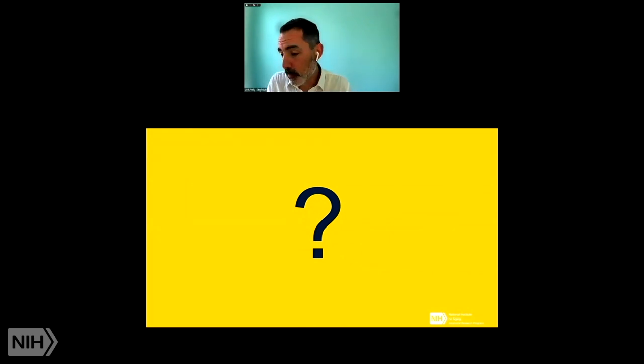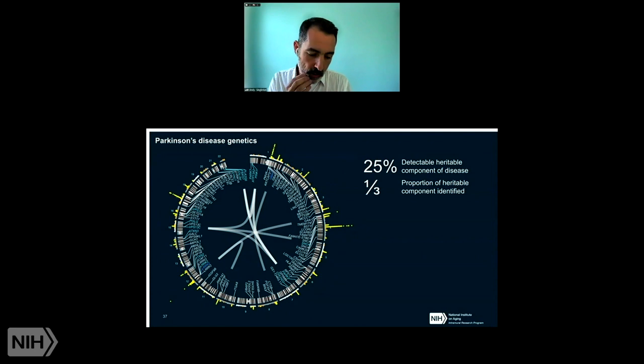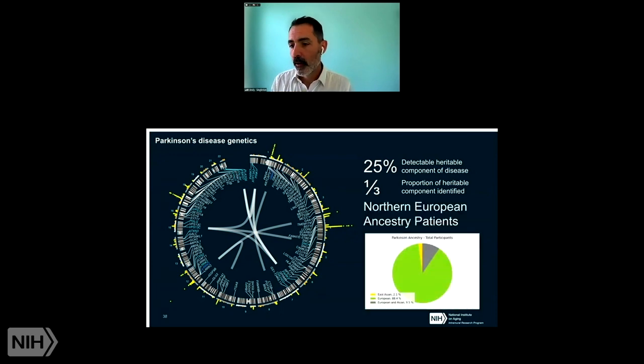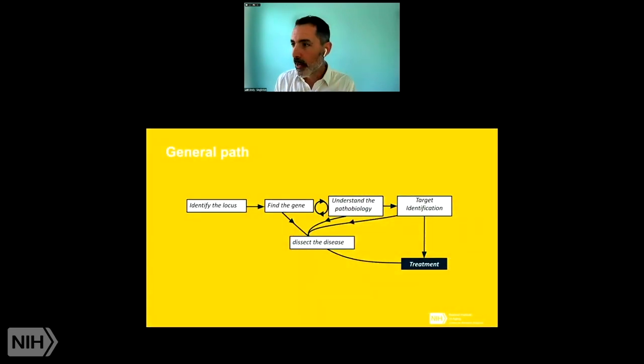So, so given that, which I think is pretty successful, where do we go next? So here's where it's not so successful. So the heritable component of Parkinson's disease now we know is about 25%. So the average Parkinson's disease patient, 25% of their liability, 25% of the reason they have disease is genetics. We only know the identity of about a third of that. So we've got a lot more to find here. The really bad bit though is that the vast majority of work that we've done has been in Northern European ancestry patients in genetics. So Parkinson's disease is clearly a global disease, but we really have very little understanding of the contribution of genetics in non-Northern European ancestry patients. If we are to treat this global disease, we have to really invest in understanding the genetic basis of disease in global populations.